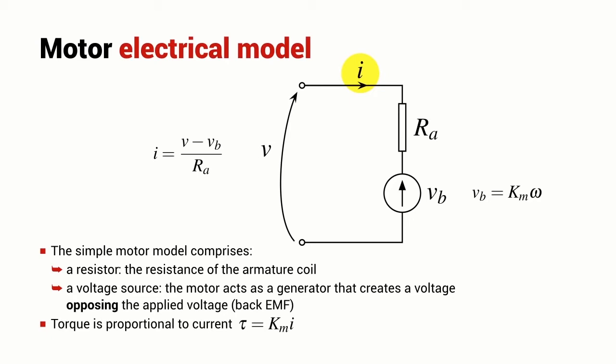These two KMs have exactly the same value though they're written typically with different units. This one here has units of volt seconds per radian. This one here has units of newton meters per amp, but with a little bit of effort you can show that these two units are in fact equivalent.